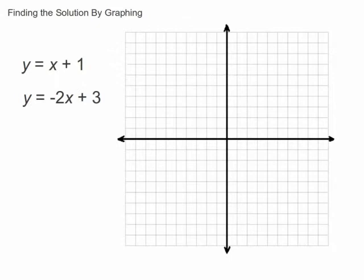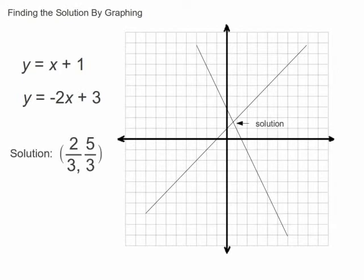To solve a system of equations by graphing, convert both equations to slope-intercept form if they aren't already, and graph the lines. Find the point where the lines intersect. That point is the solution for this system of linear equations.